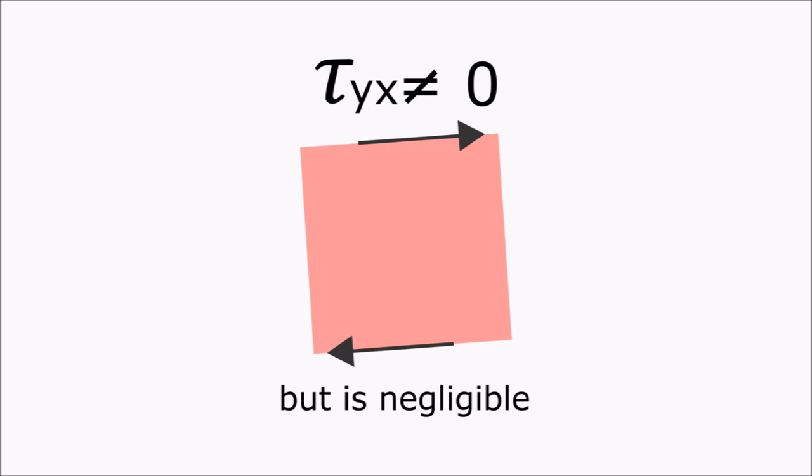Now that suggests, when we go back to looking at just one infinitesimal cube, that there actually is a tau_yx force. Since the squares in real life are cubes of material and they can't overlap, the top half, where there is an overlap, is being pushed away, out from the built-in end of the beam. And, since forces come in pairs, the bottom half is being pulled back towards the built-in end.